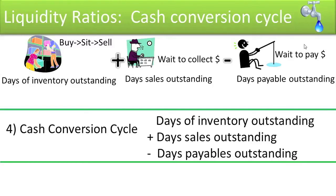The longer the cash conversion cycle, the less liquid the company is. The cash conversion cycle formula was created to address the weakness of other ratios in that they mistakenly assume that current assets will be converted to cash evenly and that current liabilities will be paid off evenly. The cash conversion cycle should be considered along with a company's current ratio, quick ratio, and working capital to better assess a company's liquidity.